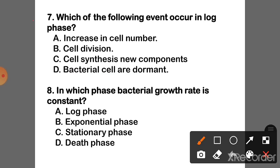Question 7: The correct answer is Option C — Cells synthesize new components.